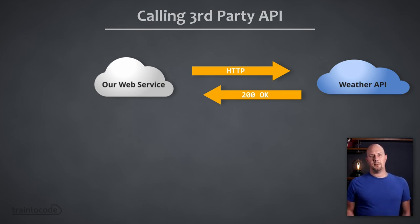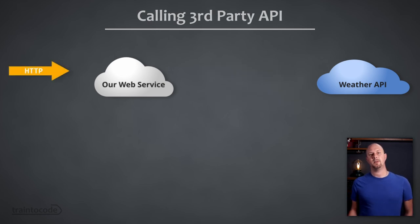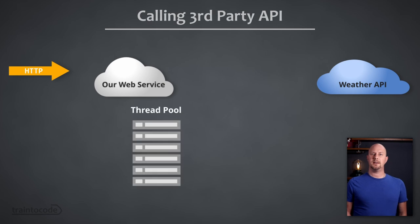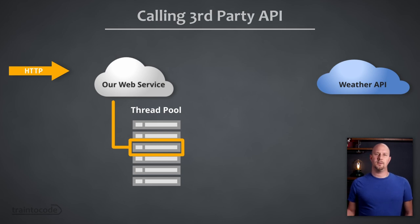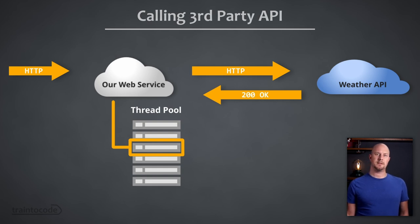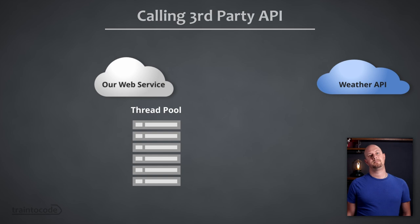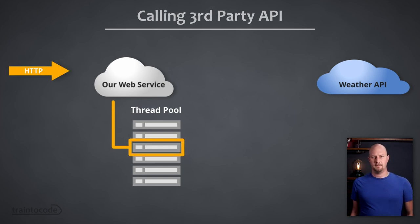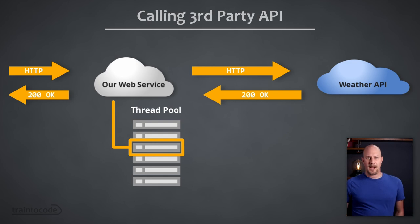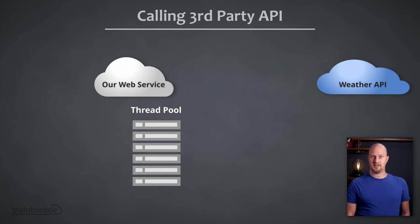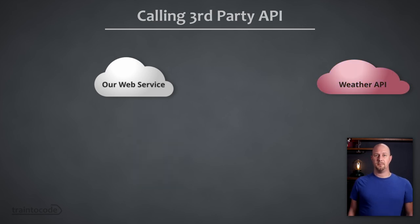When somebody using our app wants to know the weather, the front end makes an HTTP request to our web service. That starts a new thread which executes code that makes an external API call to the weather API, waits for the response, does some processing, and returns the HTTP response back to the front end — crucially freeing up that thread. This loop is like our electrical circuit. So what happens if the weather API starts to have a problem, just like our toaster did?